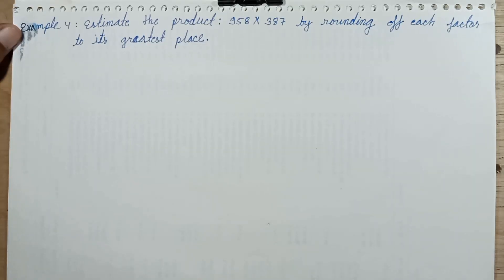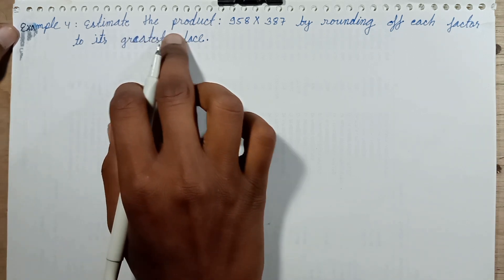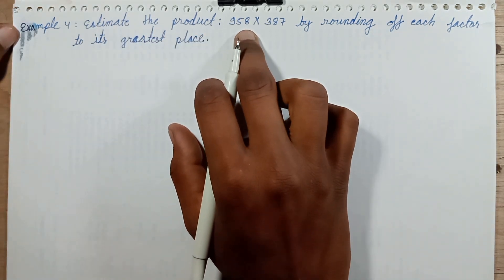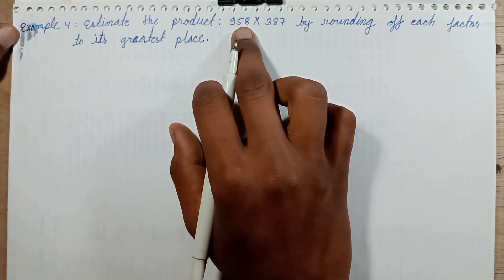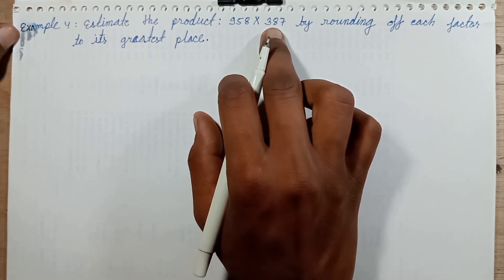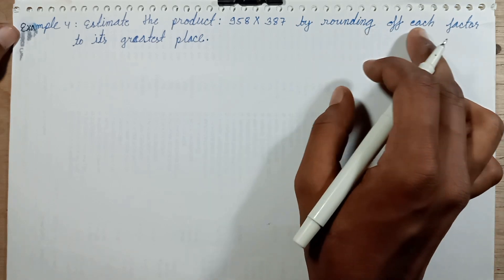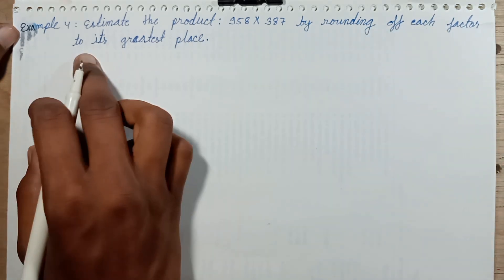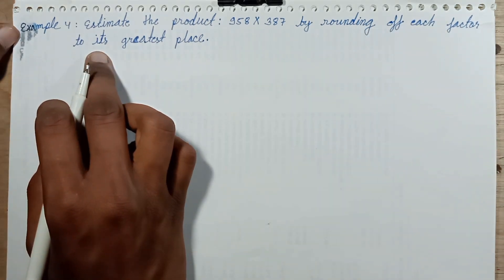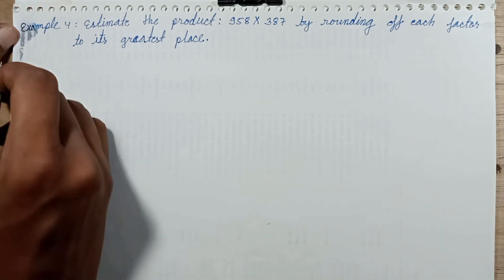Hi everyone, welcome back to this episode. This episode discusses example 4: estimate the product of 958 and 387 by rounding each factor to its greatest place. Let's solve.